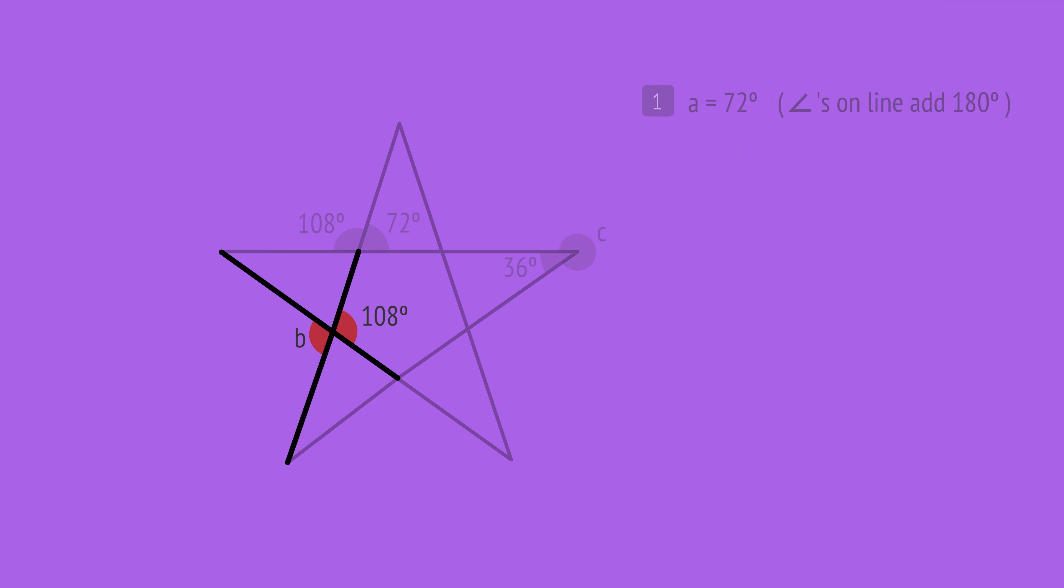Angle B is vertically opposite to this angle. Since vertically opposite angles are equal, angle B also equals 108 degrees.